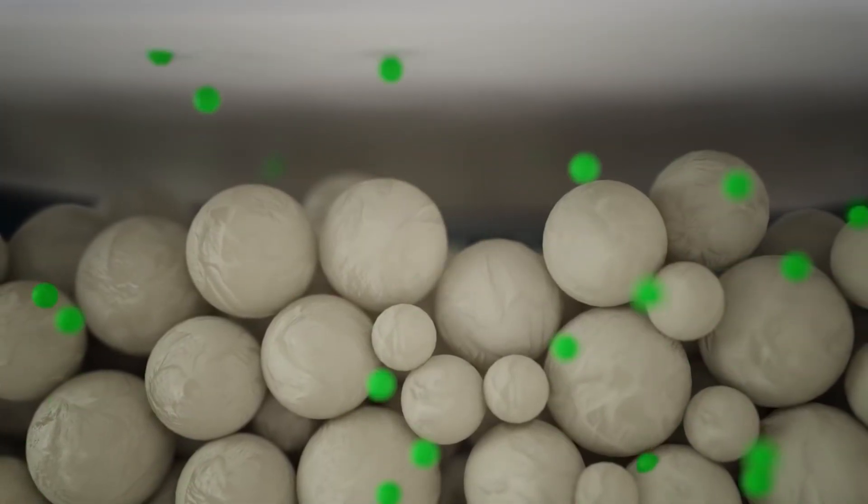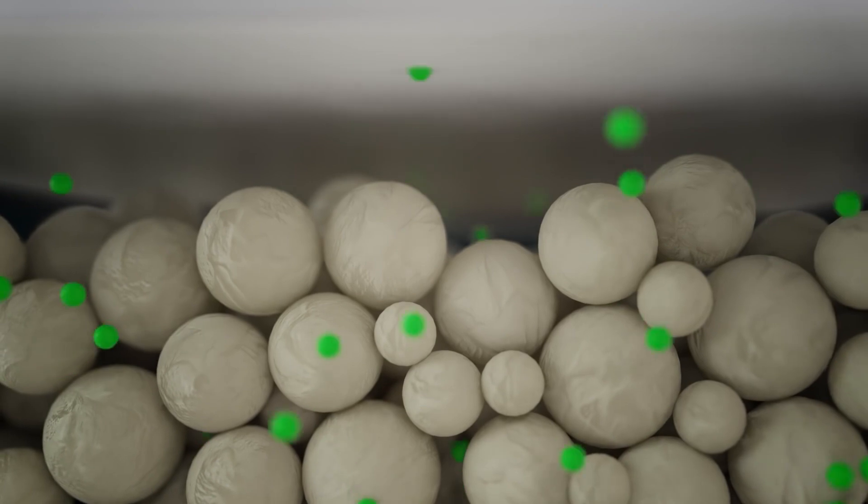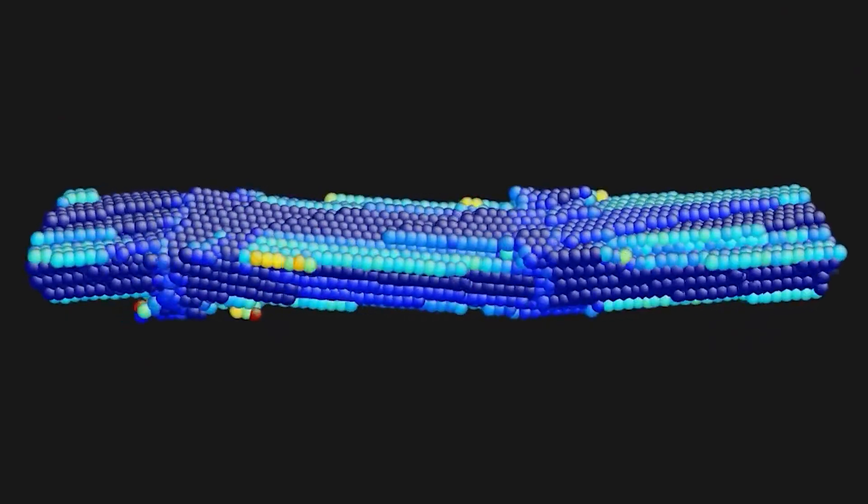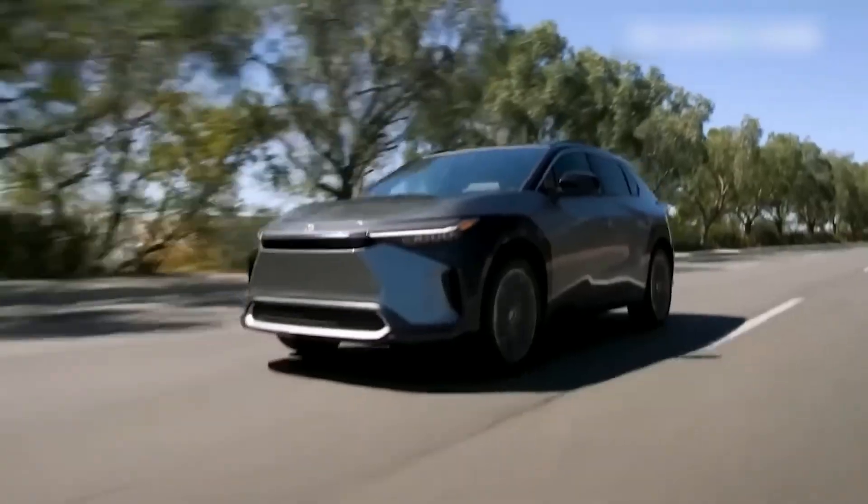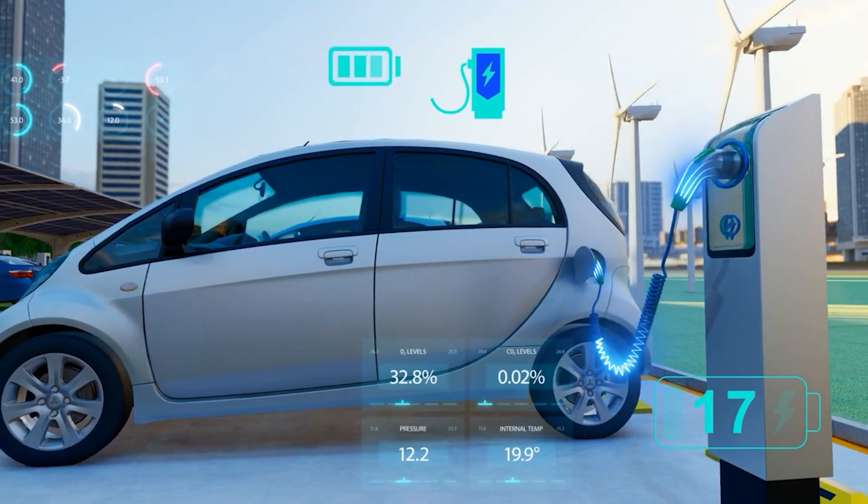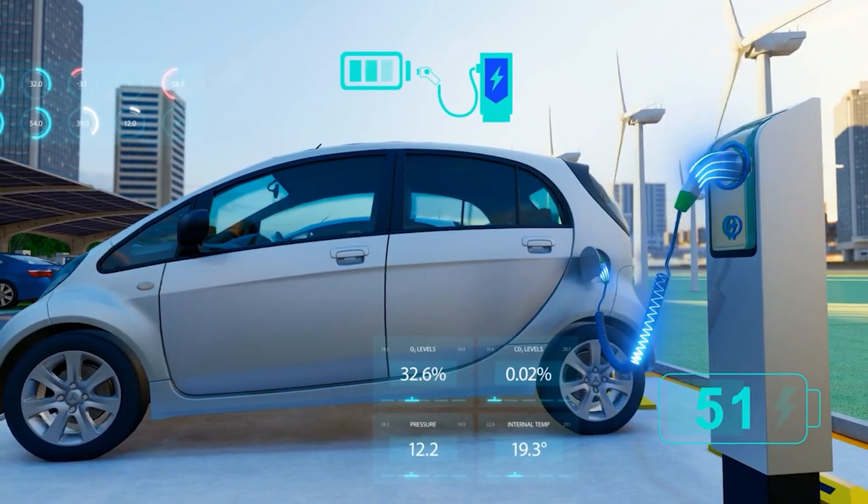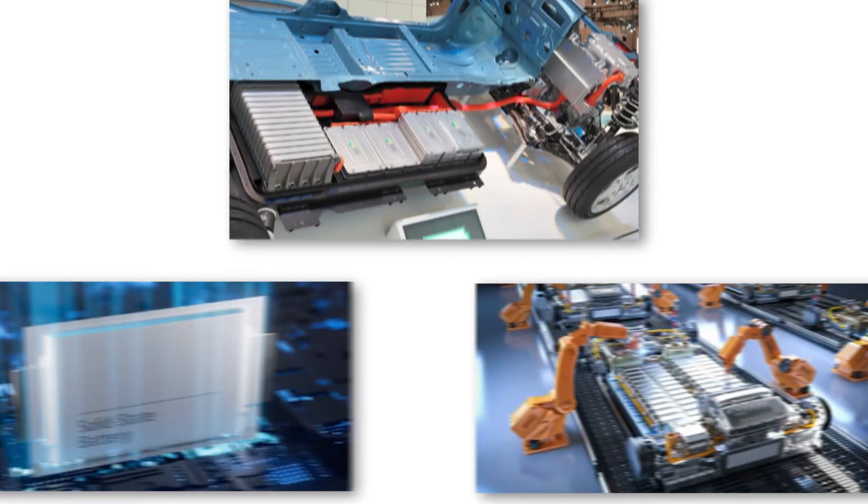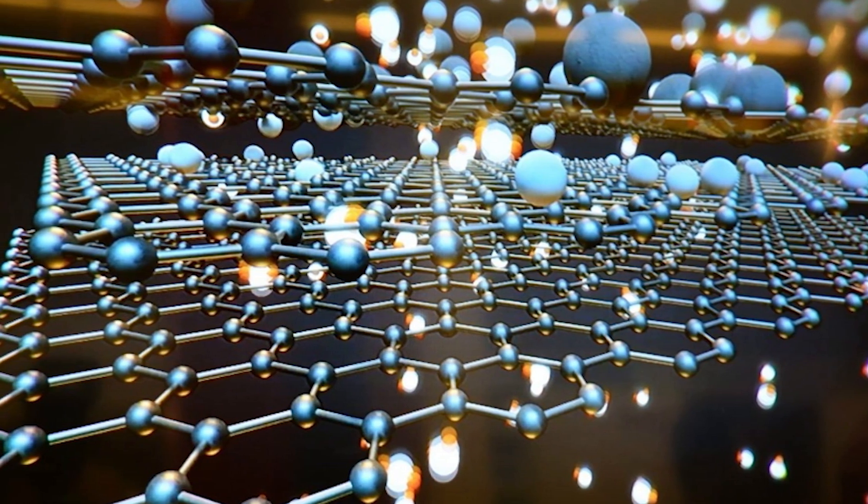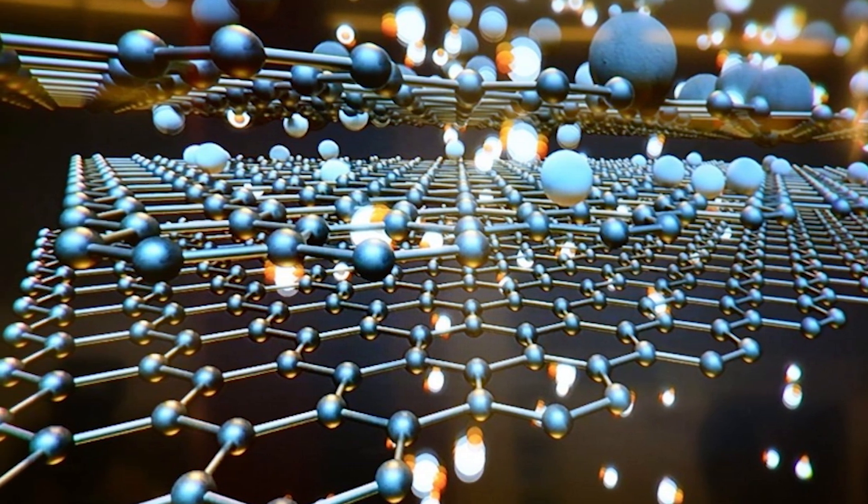Samsung's solid-state batteries eliminate the liquid electrolyte entirely. Instead, they use a solid ceramic electrolyte just a fraction of a millimeter thick. This change unlocks several major advantages: faster charging and discharging, greater stability leading to longer battery life and improved safety, and higher energy density, allowing for smaller and lighter batteries without sacrificing performance.